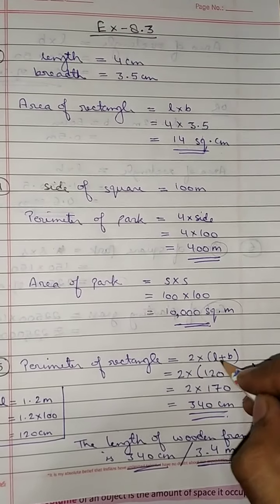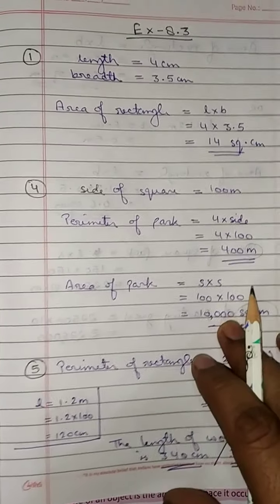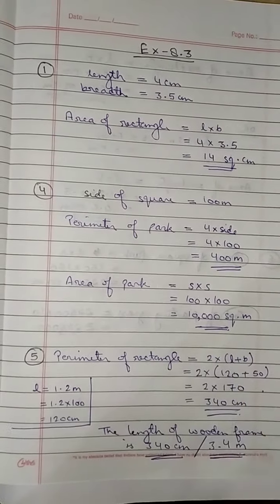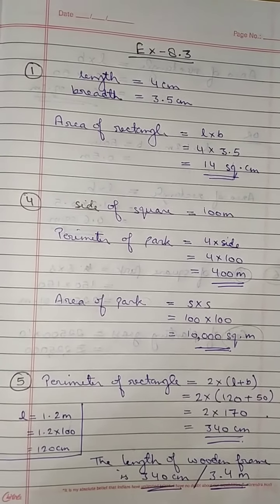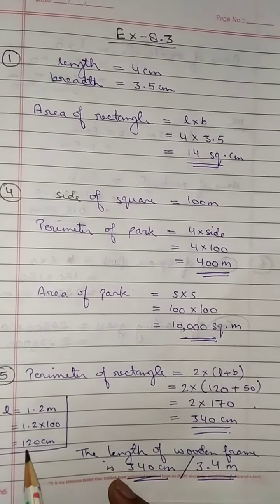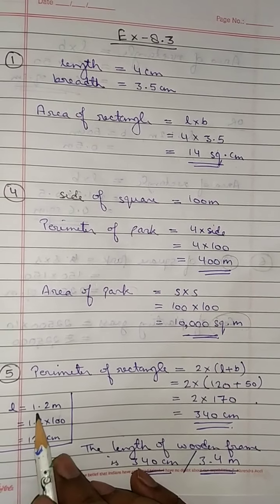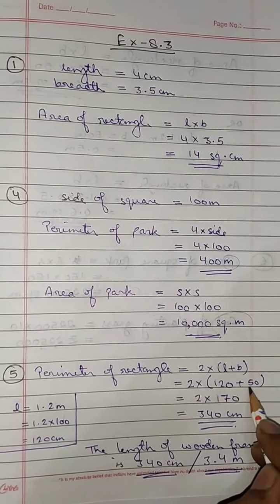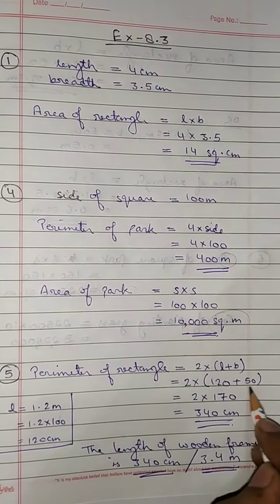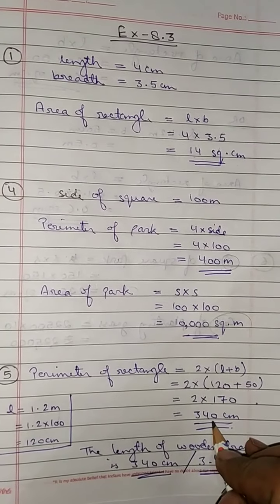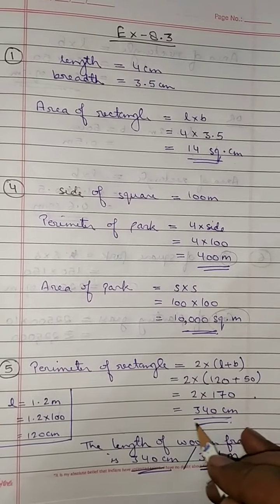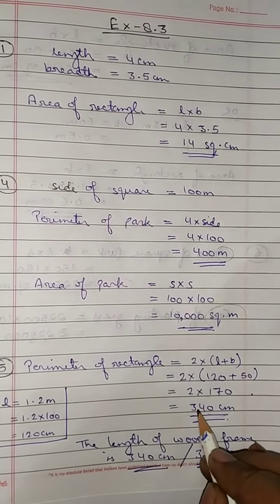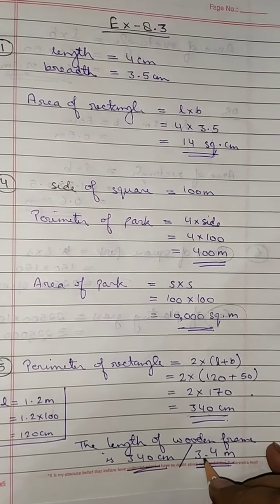The perimeter of rectangle is 2 into (L + B). The length is 1.2 meter and breadth is 50 centimeter — the units are different, so we will make them the same. Converting 1.2 meter into centimeter: 1.2 into 100 equals 120 centimeter. So length is 120 cm and breadth is 50 cm. 120 plus 50 is 170, and 170 into 2 is 340 centimeter. You can convert this to meter: 340 centimeter equals 3.4 meter. Both answers are correct.